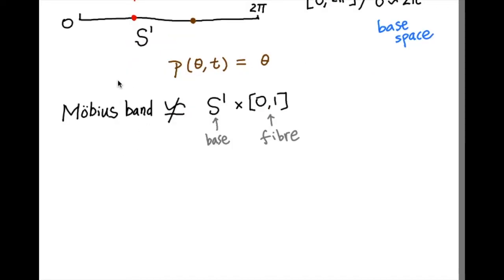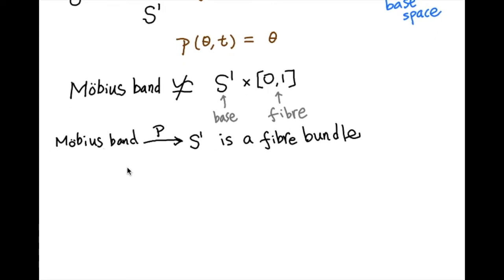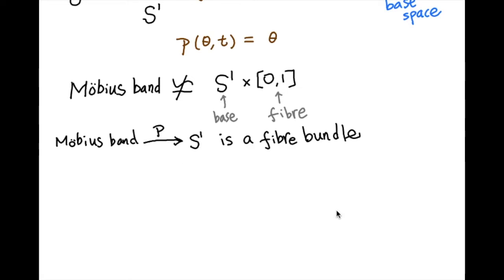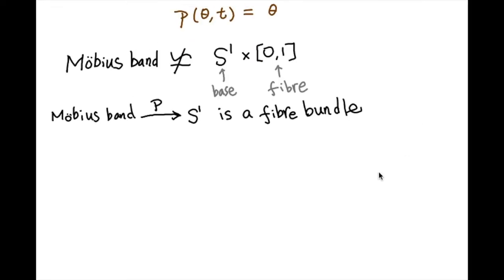But locally the Möbius band is a product space. More precisely, we'll say the map P from Möbius band to S¹ is a fiber bundle. When we say this, assuming we know that P is well defined and continuous, what do we need to check?